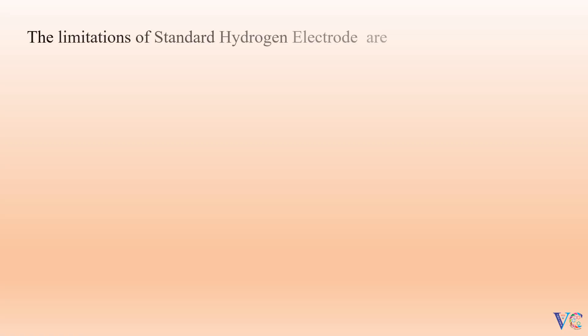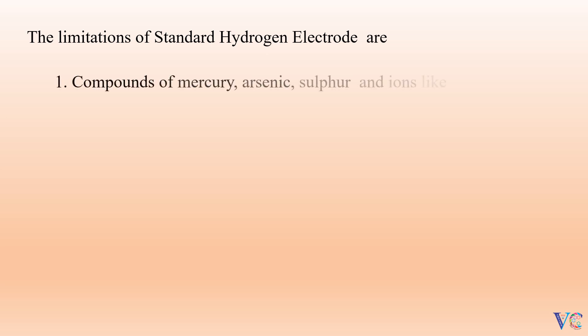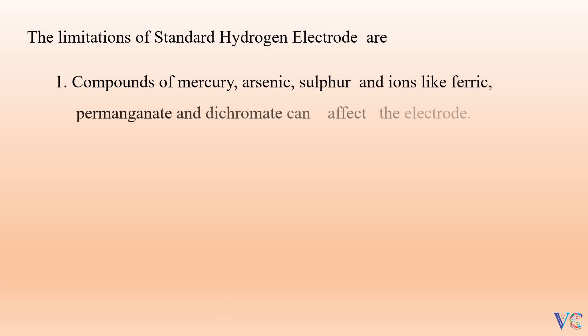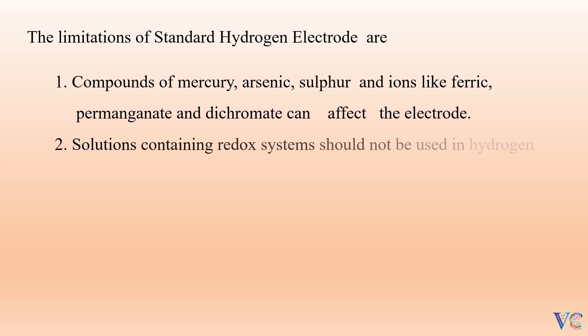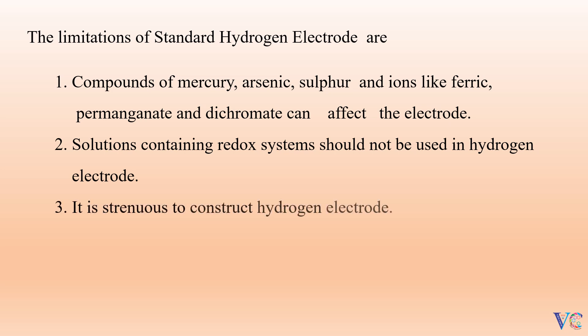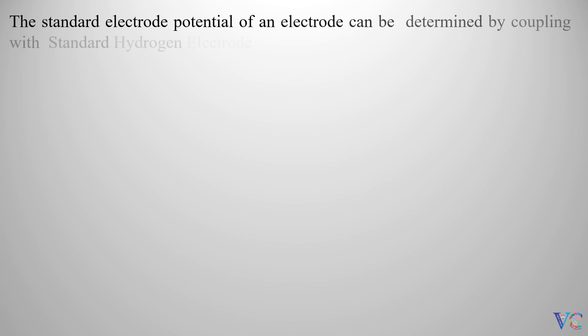The limitations of the standard hydrogen electrode are: compounds of mercury, arsenic, sulfur, and ions like ferric, permanganate, and dichromate can affect the electrode. Solutions containing redox systems should not be used in the hydrogen electrode. It is strenuous to construct the hydrogen electrode. The standard electrode potential of an electrode can be determined by coupling with the standard hydrogen electrode.